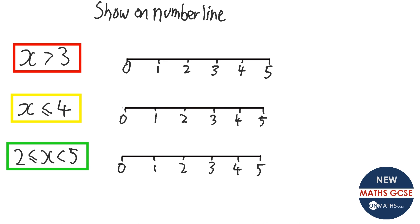This question asks us to show the inequality on a number line. The first one says x is greater than 3. I draw a hollow circle at 3 and an arrow going to the right, showing it goes on forever because any number greater than 3 is valid. The next question says x is less than or equal to 4, so I put a dot at 4 and go left. Because it can be 4, I fill in the dot.